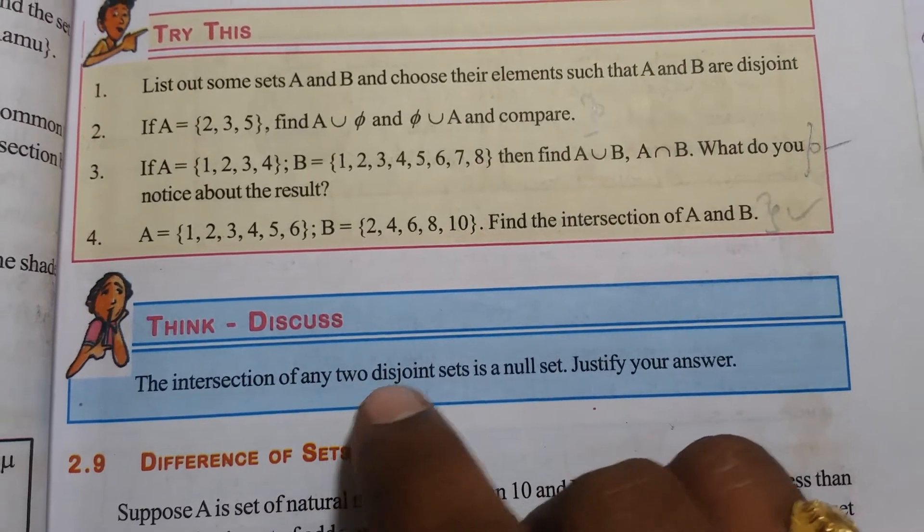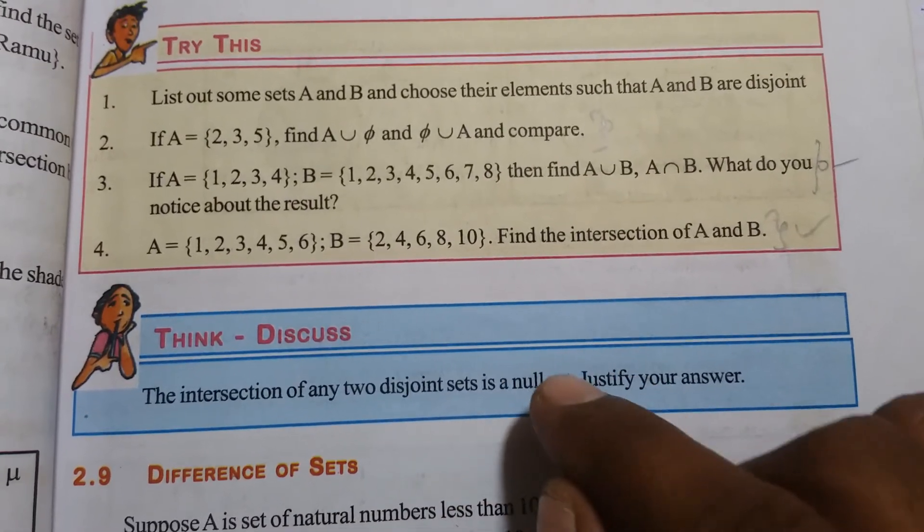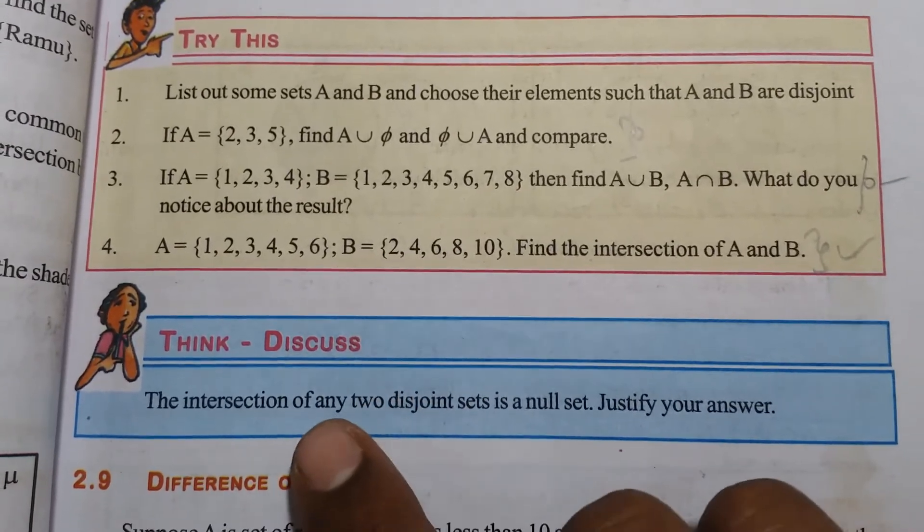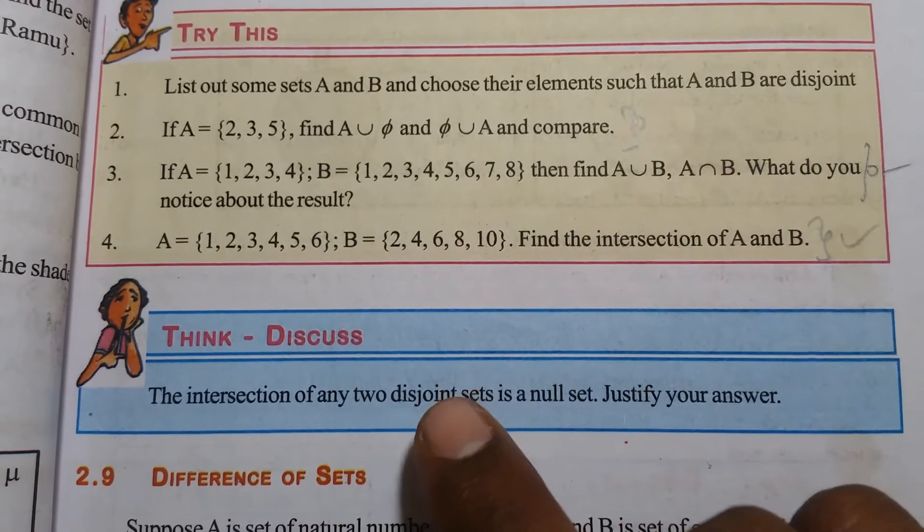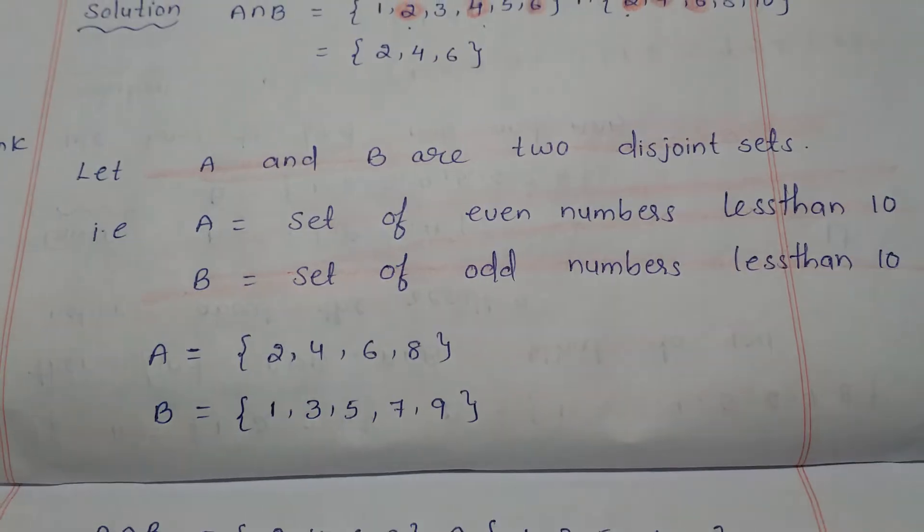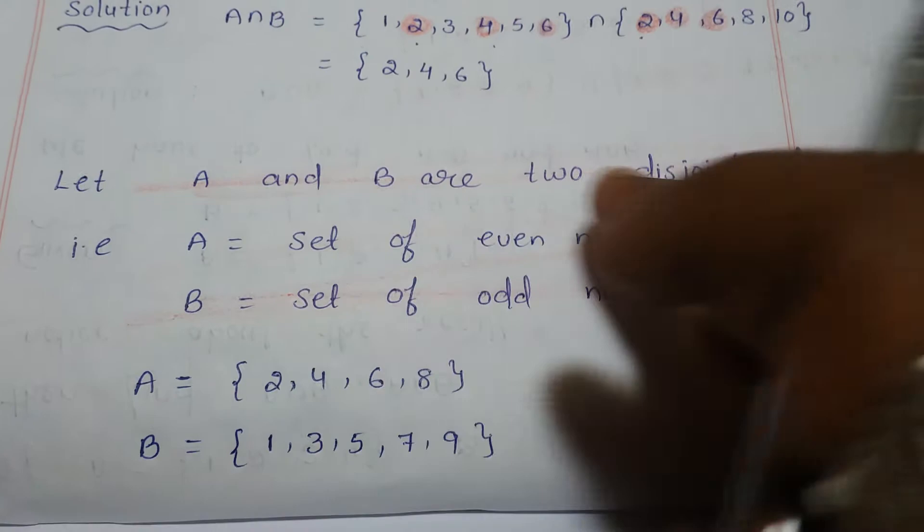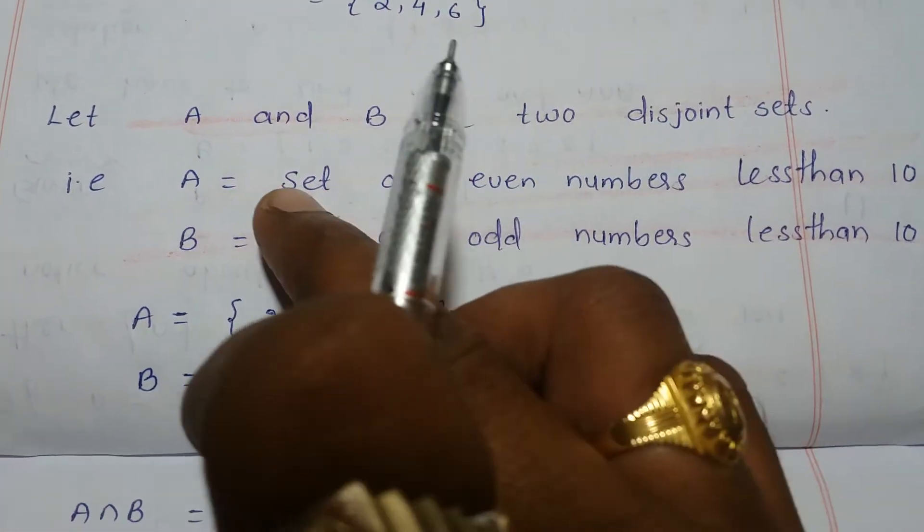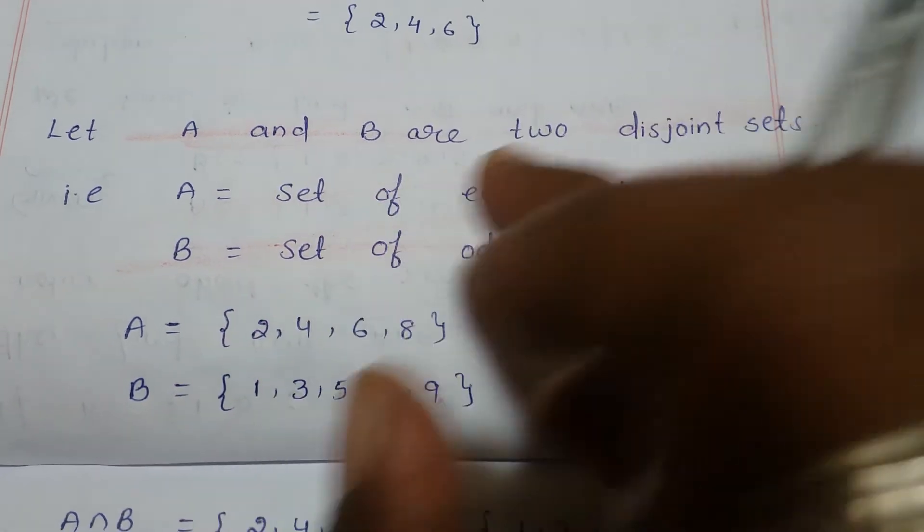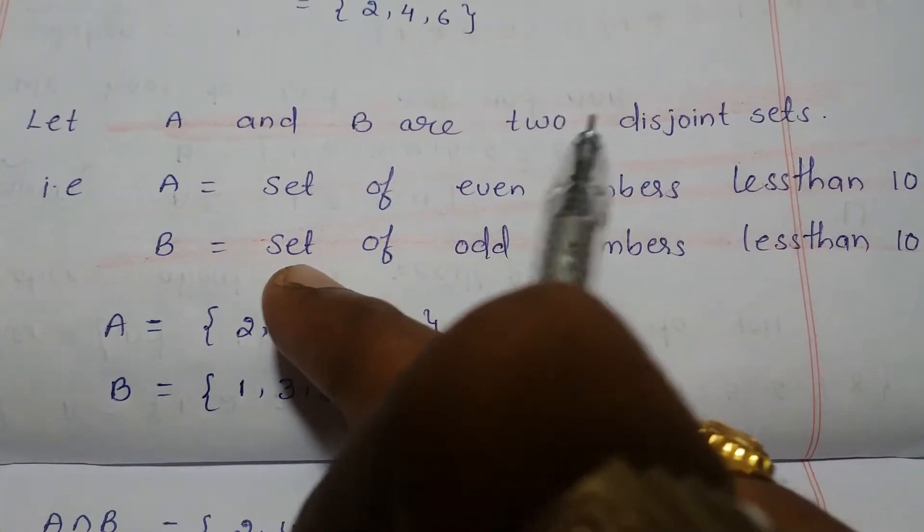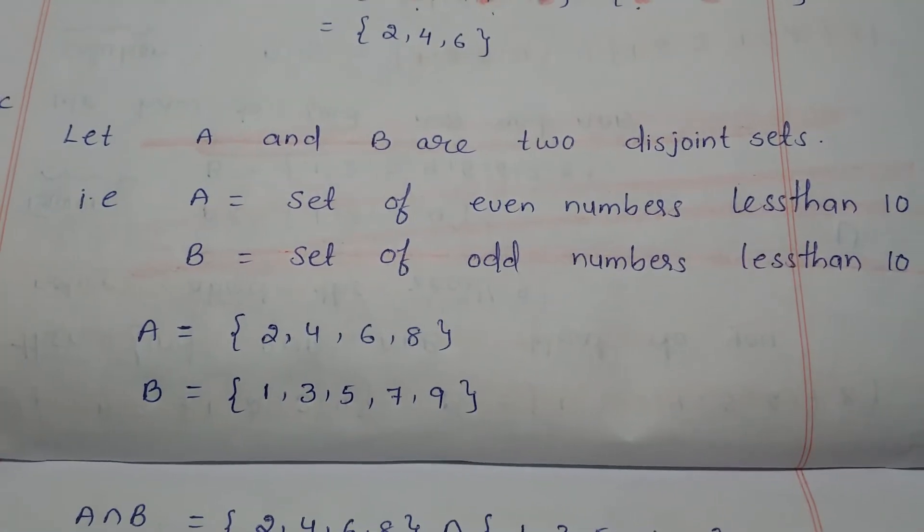The intersection of any two disjoint sets is a null set. Let A and B be two disjoint sets. We take A as the set of even numbers less than 10 and B as the set of odd numbers less than 10.